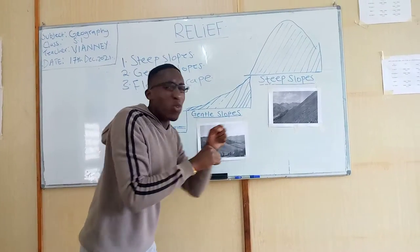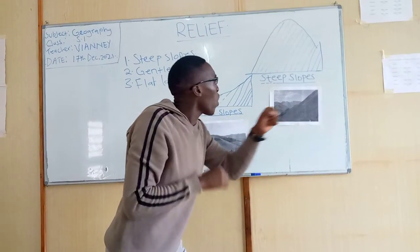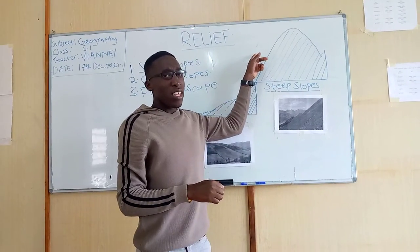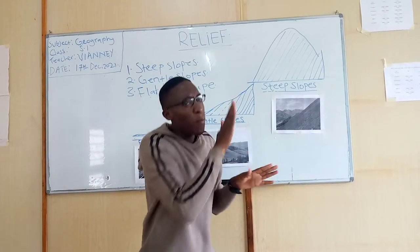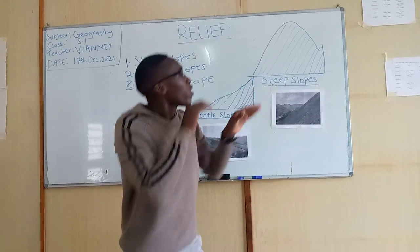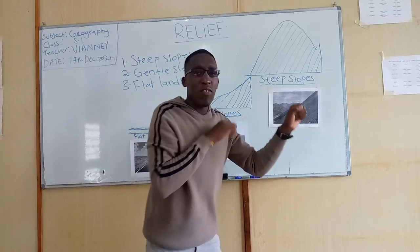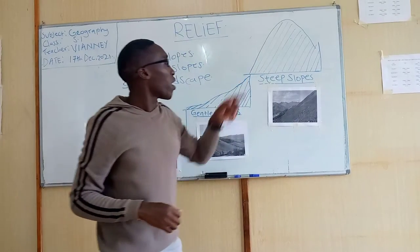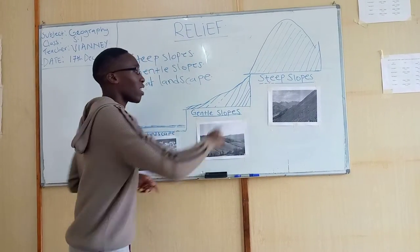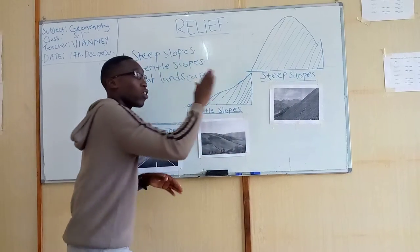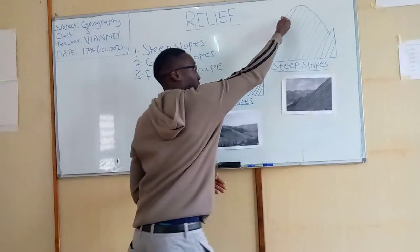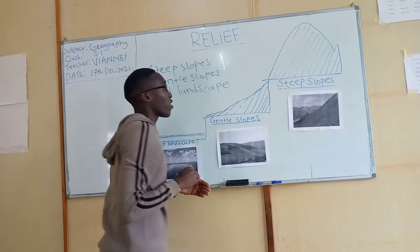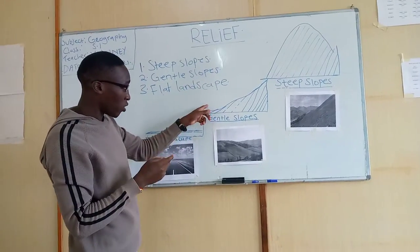It is very steep, as you can see. Imagine if you are walking along here — that means you have to use a lot of energy to struggle and go up. It is very steep, so you have to use a lot of energy to walk and move here. That is steep slopes.